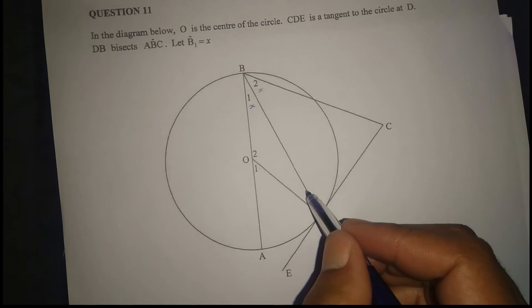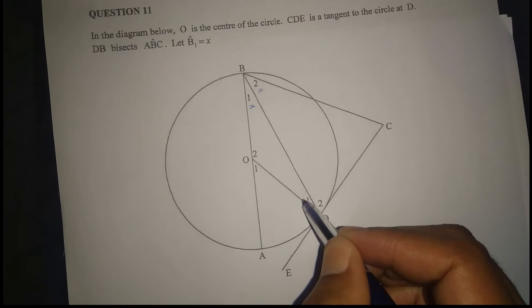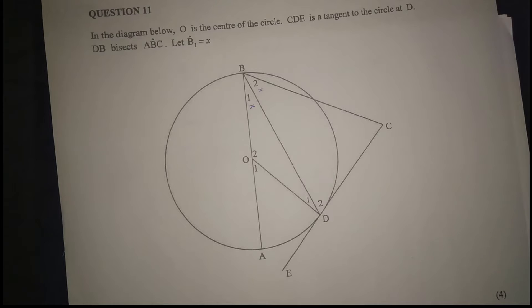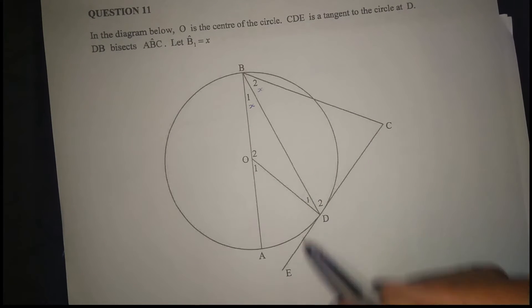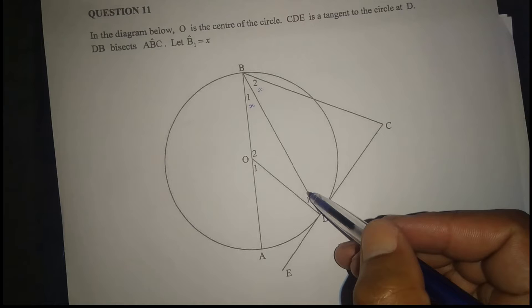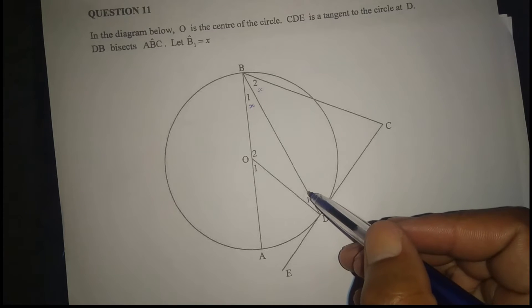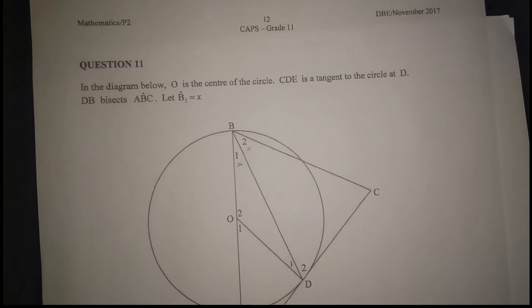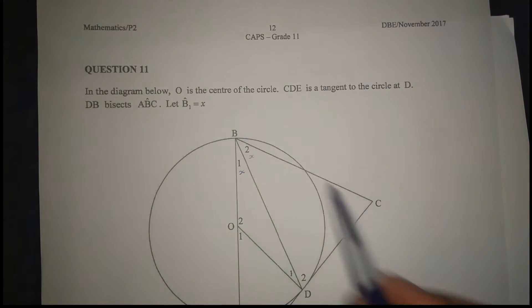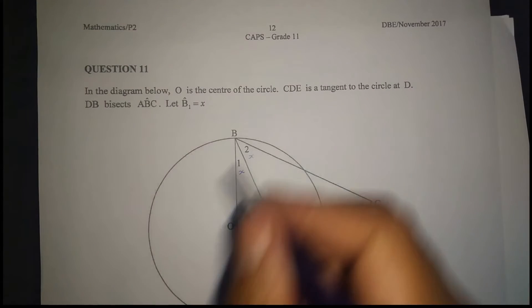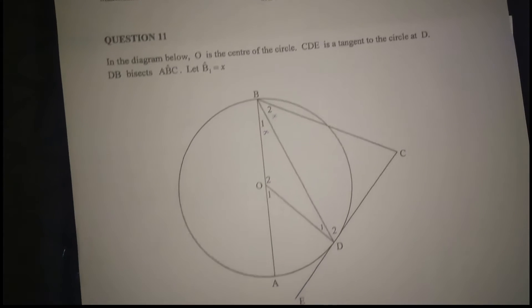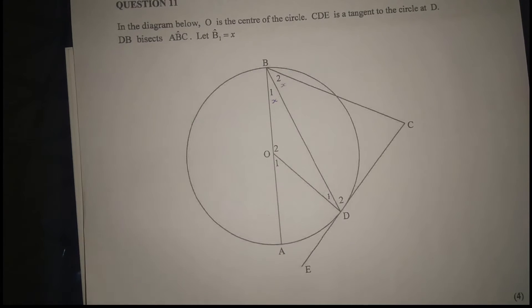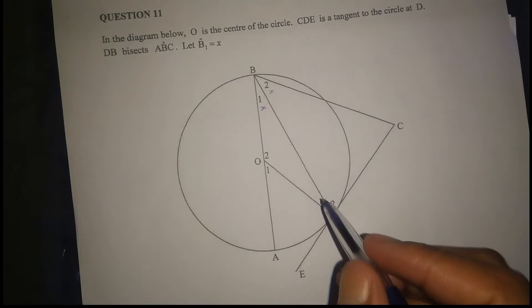We need to show that D1 is equal to B2. Once we show D1 is also equal to X, therefore it continues, and we have proven that BC is parallel to OD because the alternate angles are equal.